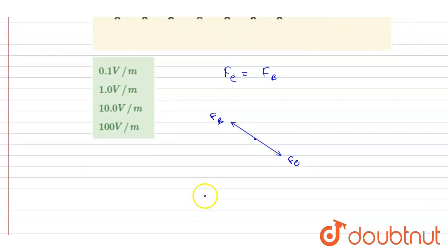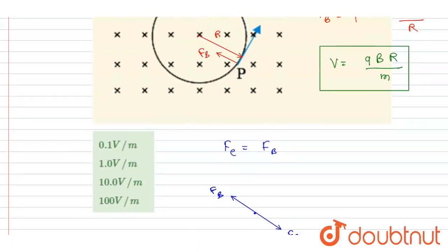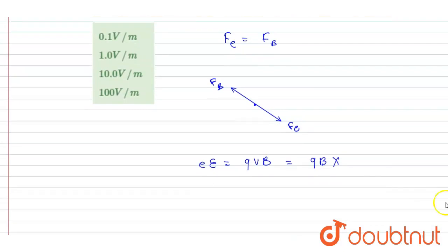So if I write down the electric force, it is qE. Magnetic force, as we have seen earlier, it is qvB. You can put the value of v as well, so it is qB into v, where v is qBr/m.